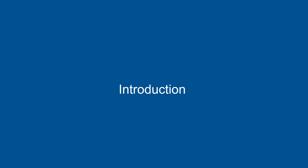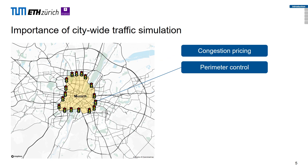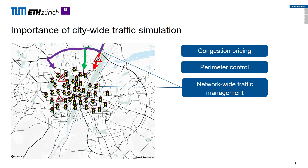Why do we bother to have a city-wide traffic simulation? There's an extensive list of applications that could be conducted better with one. For example, if you want to introduce congestion pricing or apply perimeter control — a very common example is a low emission zone in the city center — we are interested to know what will happen to the rest of the network. Or perhaps network-wide traffic management: if we have a rerouting strategy at the freeway authority and urban traffic control operators want to apply signal optimization.